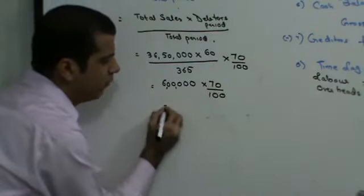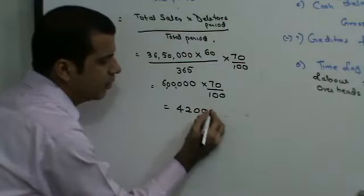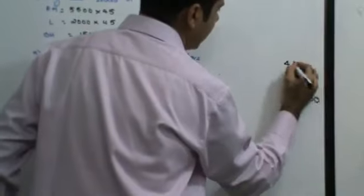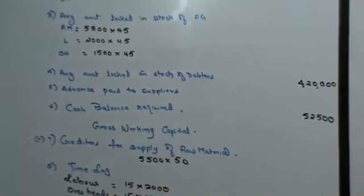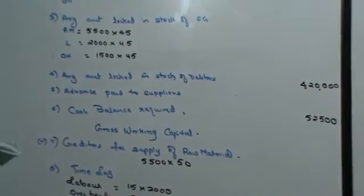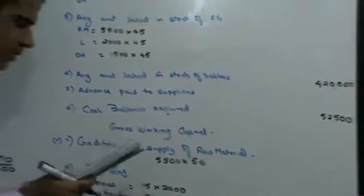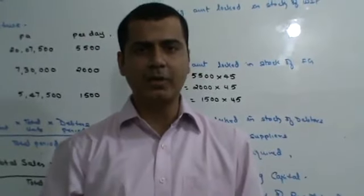70, 6 out of 42, 4,20,000. So your debtors figure is going to be 4,20,000. Debtors figure is going to be 4,20,000. Balance figures, you can calculate and complete the sum. This finishes the sum. Let's stop here for the day. Thank you.